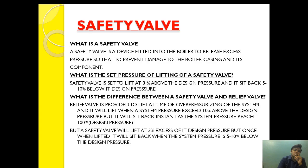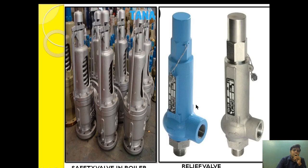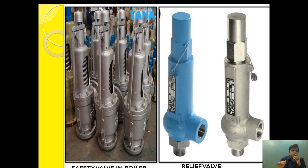Now the question comes to mind: what is the set pressure of the safety valve? Basically, the safety valve is set to lift at 3% above the design pressure, and it sits back 5 to 10% below the design pressure. Suppose the design pressure is 10 bar — the safety valve will lift at 10.3 bar and will sit back at around 9.6 to 9.8 bar, preventing frequent operation.